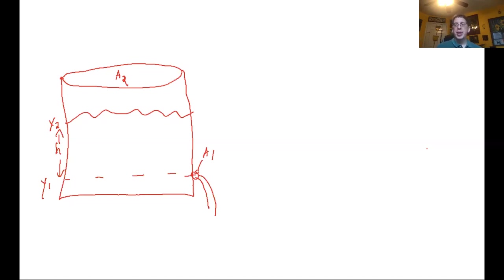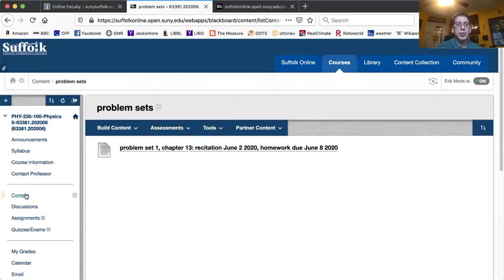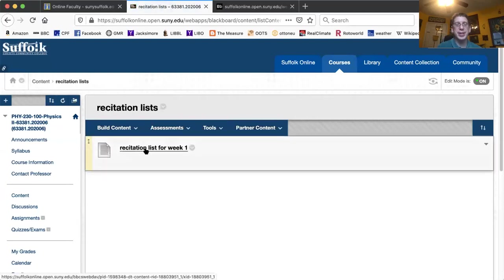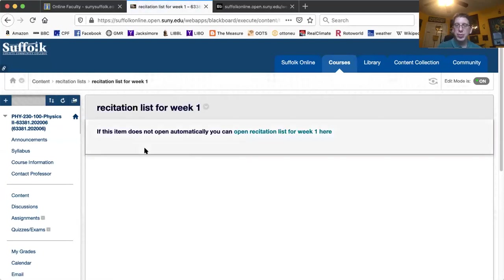From here, what you're going to do is go back to Blackboard. Go to content. I have recitation list. This is your recitation list for week one. You download that. That list will tell you who you're working with and which problems you're going to be working with this week. It's also the problems for chapter 21, the next chapter we're going to be doing in the book.